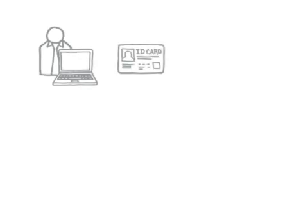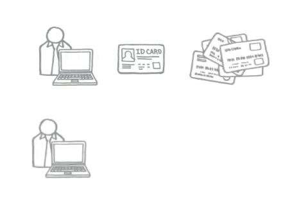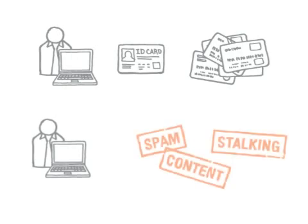If you're an online retailer, consider the value of knowing that an order is being submitted from a computer associated with stolen credit card use and identity theft at other online merchants. If you're a social network, consider the value of knowing that a new account is being set up from a computer associated with spam, posting inappropriate content, and stalking children at other online communities. Providing this kind of unique business intelligence is what we do.